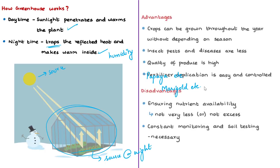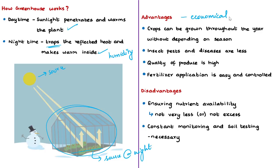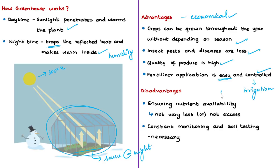The advantages of polyhouse farming: first, a polyhouse is economical compared to a glass greenhouse, though the greenhouse is more durable. Second, polyhouses protect plants from harsh external environments and serve as shelter from rain. Insect pests and diseases are reduced, and quality of produce is higher than in open cultivation. Fertilizer application is easy and controlled automatically through drip or sprinkler irrigation. Marginal farmers with small land holdings can also benefit from low-cost bamboo or polyethylene greenhouses.